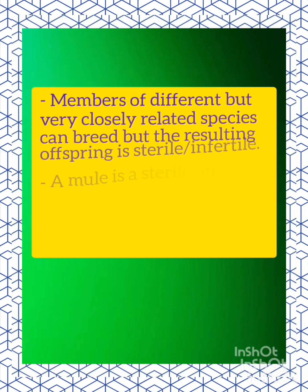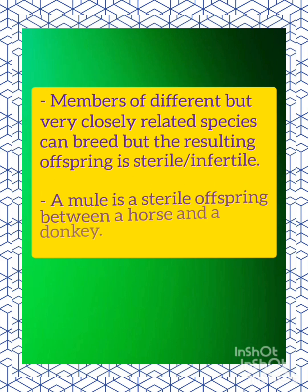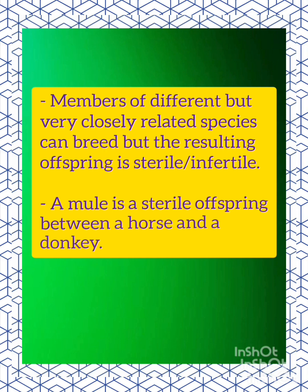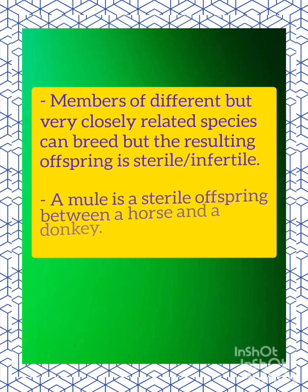Members of different but closely related species can breed, but the resulting offspring is sterile or infertile. A mule is a sterile offspring produced between a horse and a donkey.